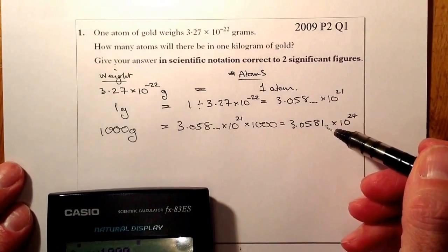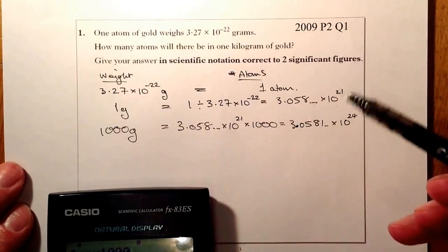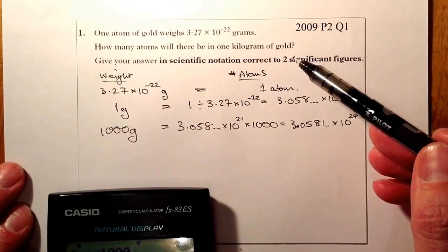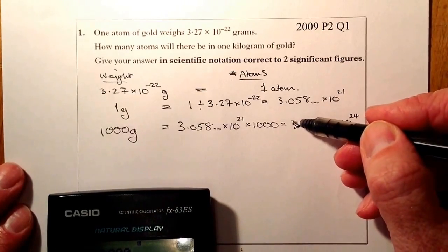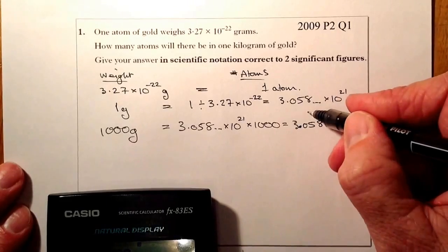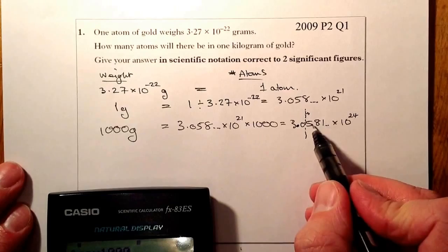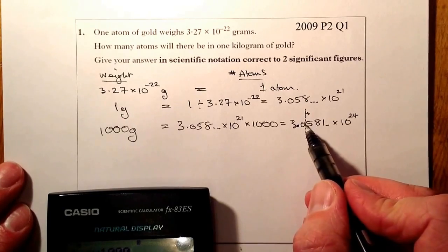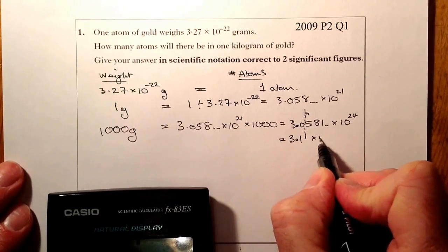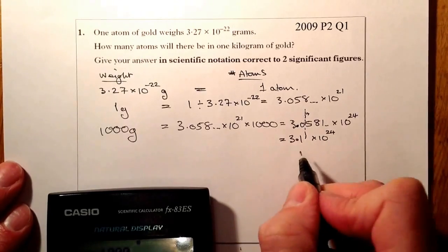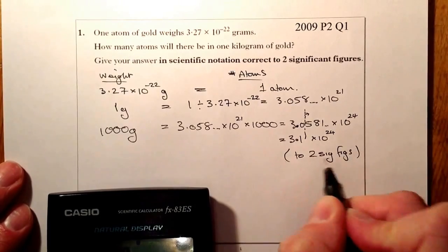From there I've got my answer, but I've also got to write it in scientific notation — which it is — and put it to two significant figures. Looking at two significant figures, it's the 3 and the 0. I cut the number there, look to the right, and the 5 rounds the 0 up to 1. So the final answer is 3.1 times 10 to the 24, and that's two significant figures.